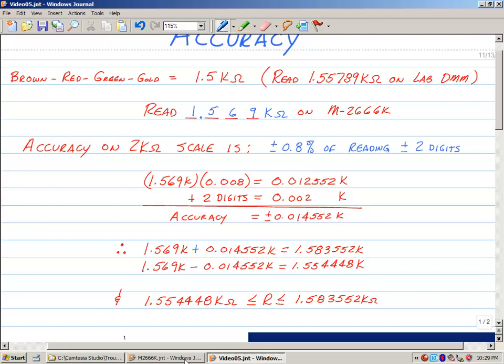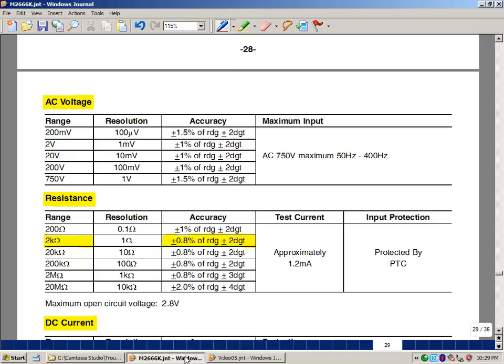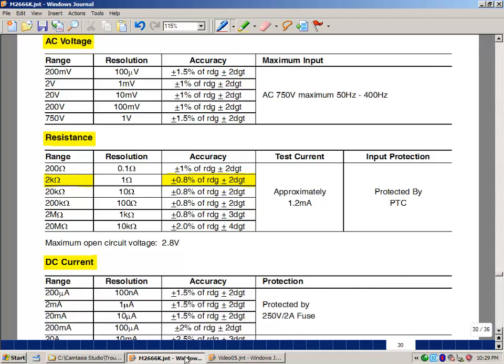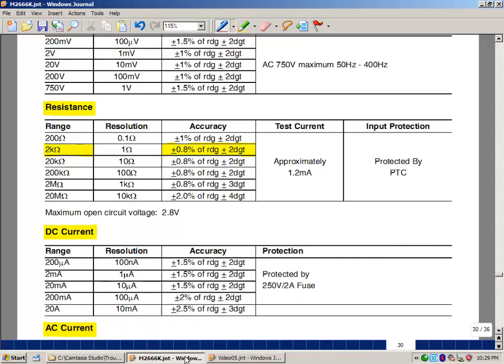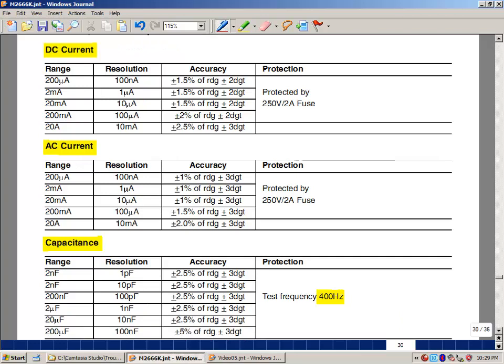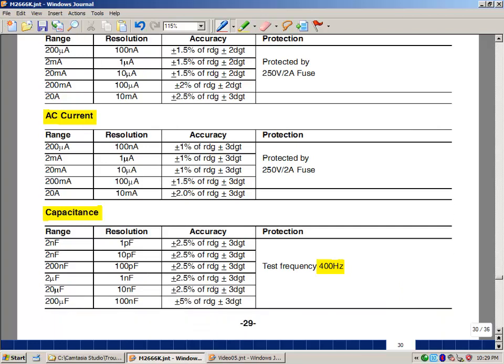DC current has a similar set of errors. The errors change on whichever scale we're on, sometimes the number of digits also. Likewise for AC current and capacitance. What I should mention here is that the test frequency of our meter is about 400 hertz. The values of capacitance are fairly constant at low frequencies but as the frequency gets much higher this would be in the hundreds of kilohertz range, the value of capacitance actually changes in frequency.